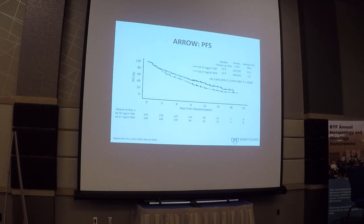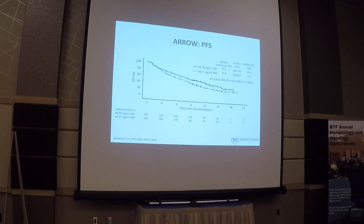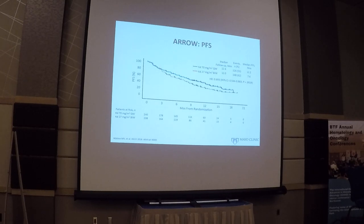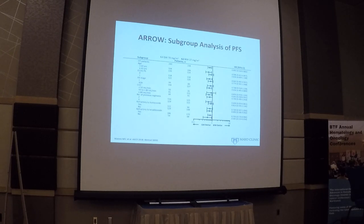This gives the opportunity to use carfilzomib in a much more convenient once-weekly schedule. However, there are caveats: there is a cardiac risk associated with the higher dose of carfilzomib, and this data is only as a single agent. We don't have sufficient data to use carfilzomib at 70 mg/m² once weekly in combination with immunomodulatory drugs — only smaller Phase 2 studies, no larger Phase 3 trials. One must be careful, especially in older patients, regarding the risk of hypertension and other cardiovascular toxicity. Subgroup analysis shows all patients benefited from higher-dose once-weekly carfilzomib, irrespective of age, performance status, ISS stage, renal function, or prior therapies.